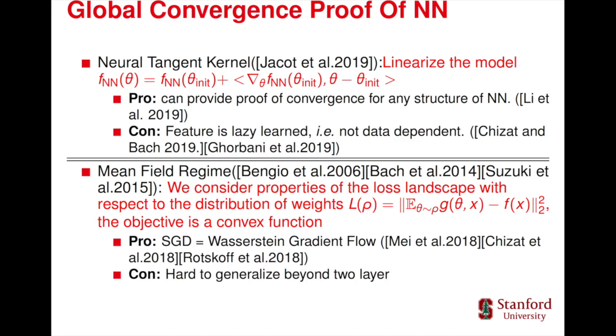Previous works link stochastic gradient descent with Wasserstein gradient flow and provide a global convergence proof. However it's hard to generalize this approach beyond two-layer neural networks.